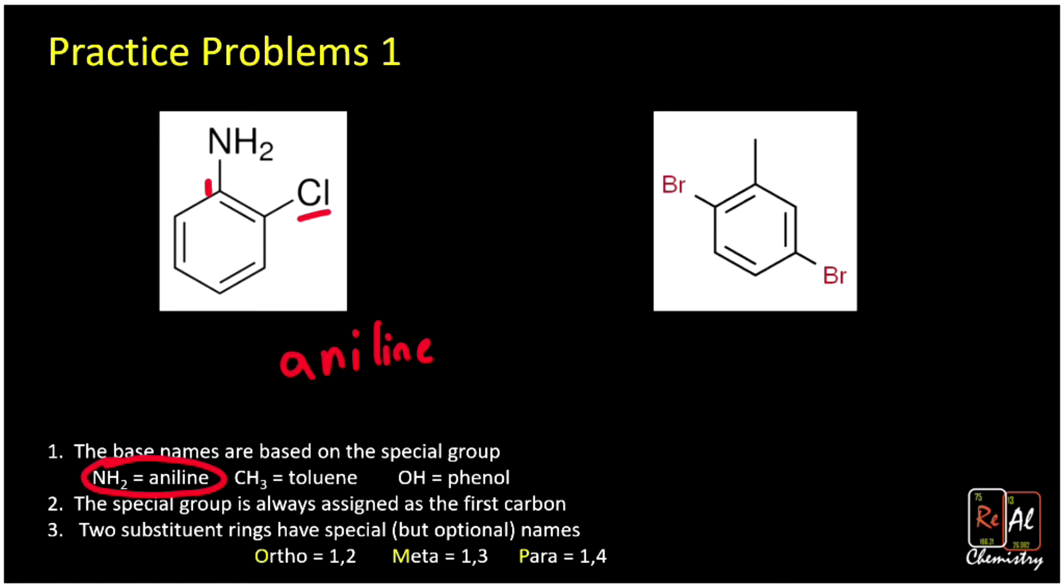Then we see that there's a chlorine substituent, and we know it's at the second carbon. Our special group on aniline, NH2, gets number one and chlorine is going to get number two. So we could call this 2-chloro aniline - totally legit, good name. Now if you want, you could also use ortho in this case because we have a group at the first and second position, so another totally good name for this would be ortho-chloro aniline.